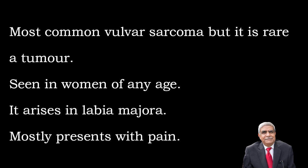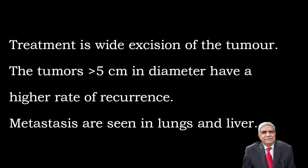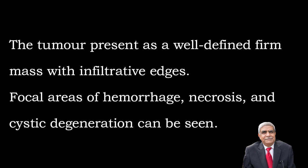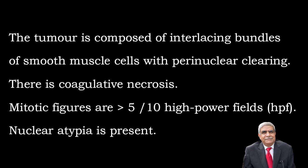Leiomyosarcoma of the vulva is the most common vulvar sarcoma but is a rare tumor seen in women of any age. It arises in the labia majora and mostly presents with pain. Treatment is wide excision. Tumors greater than five centimeters in diameter have a high rate of recurrence; metastases are seen in lungs and liver. Grossly, the tumor presents as a well-differentiated firm mass with infiltrative edges and focal areas of hemorrhage, necrosis, and cystic degeneration.